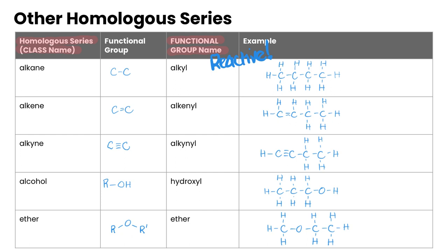We'll start with alkanes, which we saw in a previous video. They don't really have a functional group per se, but if we were to write one out it would just be the C single-bonded to C bond. Its functional group name is called alkyl. In our example you can see a variety of carbons single-bonded to other carbons — that's the homologous series called alkanes, with the functional group alkyl.